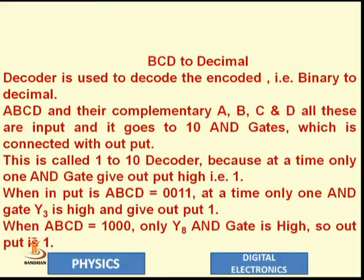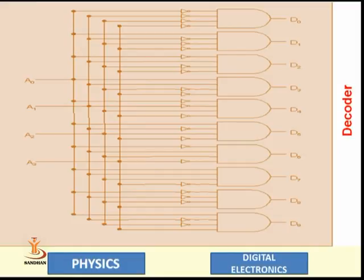This is the description regarding the process of conversion from binary to decimal or decimal to binary. Similarly, this is the figure for a decoder. We can easily understand that a decoder is used to convert binary to decimal — that is exactly the opposite work to that of an encoder.